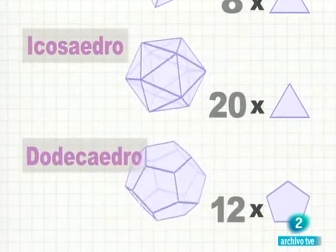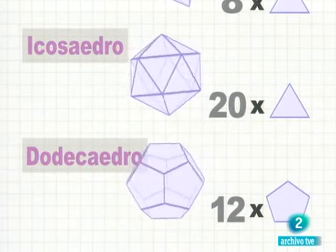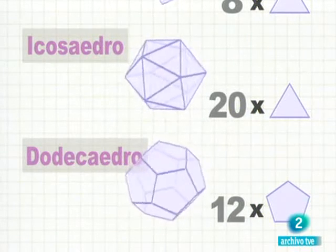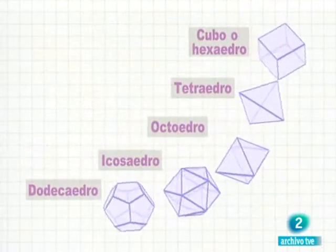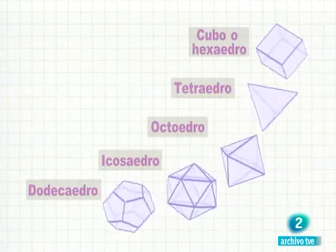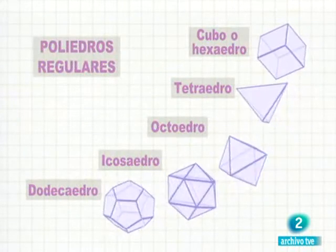Este es un icosaedro. Está formado por veinte triángulos iguales. Este otro, el último sólido platónico, está formado por doce caras pentagonales. Es un dodecaedro. Todos ellos tienen sus caras iguales y en cada vértice confluye el mismo número de caras. Son los poliedros regulares.